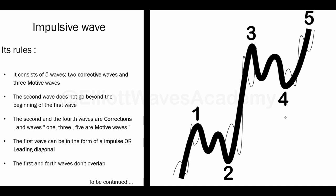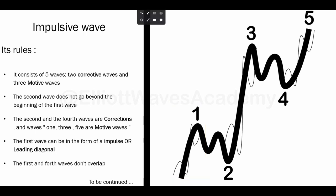The fourth rule says that Wave 1 can be an impulsive wave, arranged by the same laws, or it can be in a diagonal shape — which is apart from the motive waves — either a normal wedge or an expanded wedge. We'll see the details about the diagonals in the next lesson.